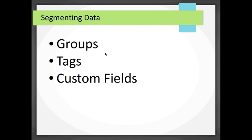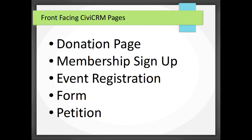There are several front-facing pages you can have with CiviCRM: a donation page, a membership sign-up page, an event registration page, a form called a profile, and a petition. The CRM is really powerful because when someone fills out a donation form, membership form, event registration, or petition, it all links back to their one contact record based on their email address — giving you a comprehensive view of your donors, members, and contacts.